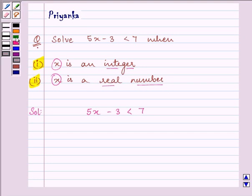So we can find the value of x first by adding 3 to both sides. To simplify it further, we have 5x is less than 10.